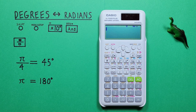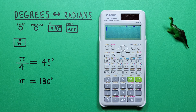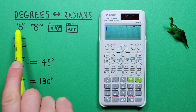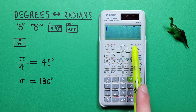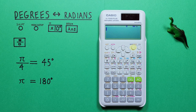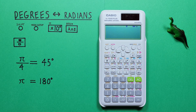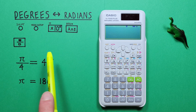Hello and welcome to HD Calcs. I'm Rick and in this video we're going to look at how we can convert between degrees and radians on the Casio FX115 ES Plus calculator. To do this we'll use the shift key, the mode setup key, the times 10 to the x key with the shift function of pi, the answer key with the shift function of DRG, and the fraction key.